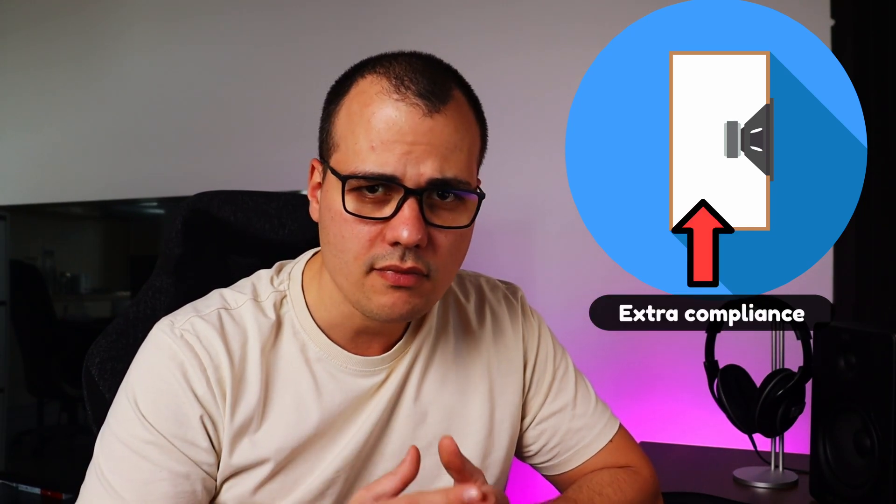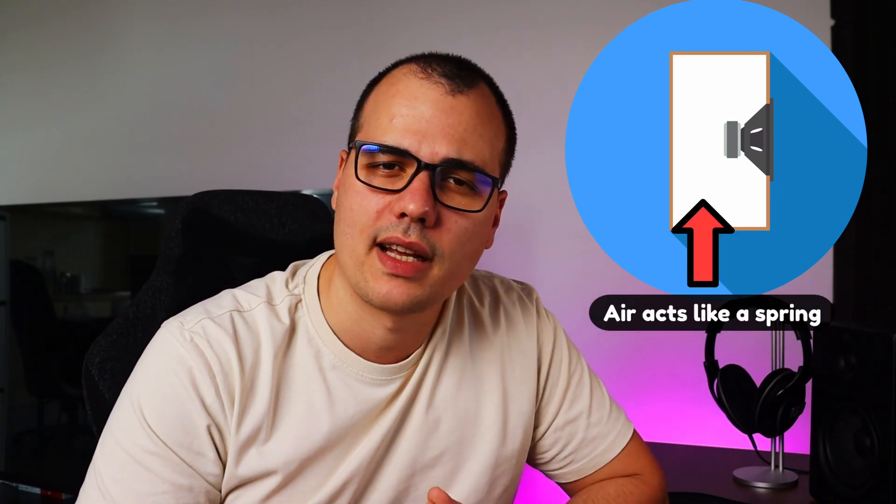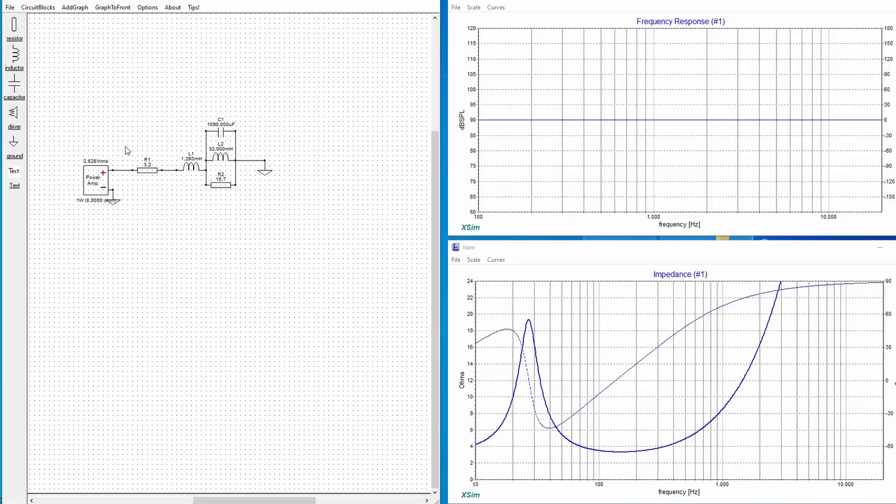So now, how do we model the response of a speaker box? Simple, by adding components to the circuit. For example, if you put a speaker in a closed box, what happens? You simply add another compliance into the mix. This is the air volume inside the box. So this means we add another inductor in parallel. For example, if we place another inductor over here.